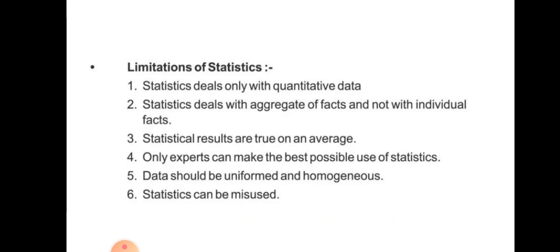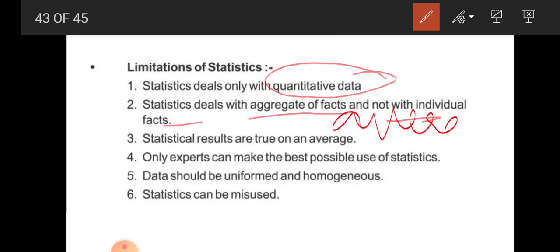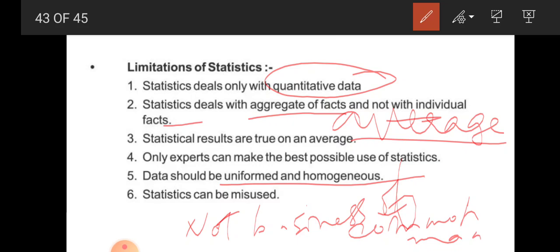However, statistics also has limitations. It deals only with quantitative data — qualitative data must be expressed in numerical form. It deals with aggregate of facts, not individual facts — we always work with averages. Statistical results are true only on average. Only experts can make the best possible use of statistics, as its methods are very complex. Data should be uniform and homogeneous, as heterogeneous data cannot be handled well by statistical procedures. Statistics can also be misused and may be biased by the user or by different instruments and tools.